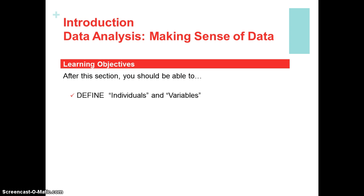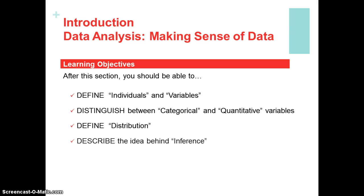Our specific objectives by the end of this section are: we want to be able to define and distinguish between the terms individuals and variables, between categorical and quantitative variables. We want to know what a distribution is, what it looks like, how we recognize one, how we describe one, and we want to understand what the idea of inference is.